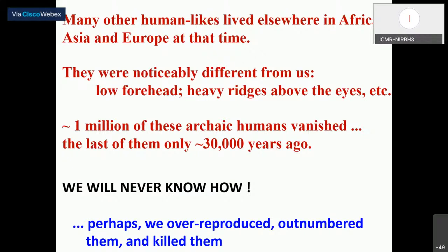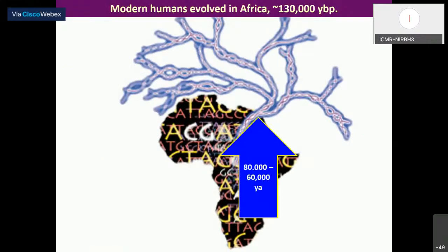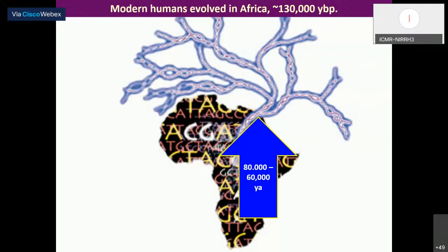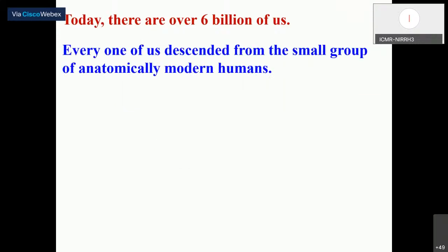We will never know exactly how they vanished. Perhaps we over-reproduced and outnumbered them, and because we were able to outnumber them, we likely killed them — that was the dominant argument. We arose about 130,000 years ago, and today we occupy all places in the world. The best date for when we came out of Africa is about 60,000 to 80,000 years ago. Today there are six billion of us, and every one of us descended from that small group of anatomically modern humans. In spite of the fact that we are fighting with each other all the time, we have a common ancestry — we are all brothers and sisters.